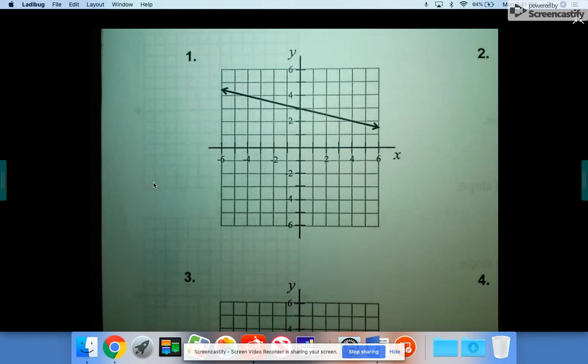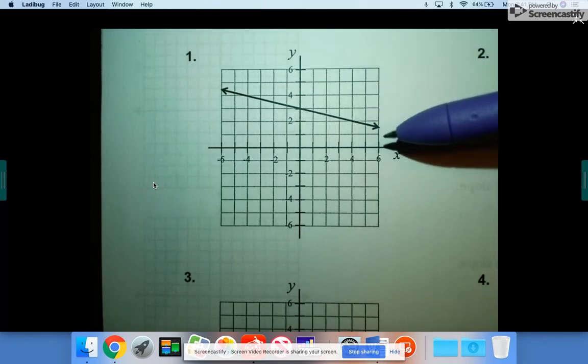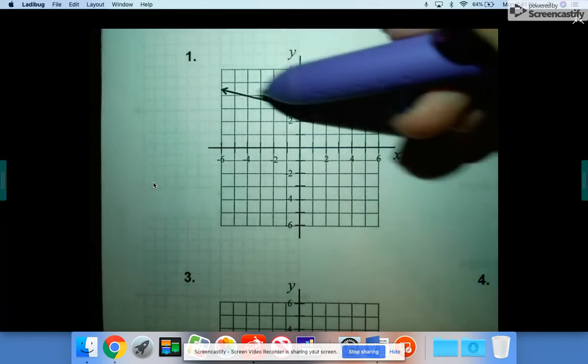Okay, we are on the back side of the worksheet now where you were calculating slope from two points counting the rise over run. Now this is very similar except that the line is already done. We're on the back side now. So the line is already drawn in.